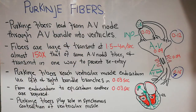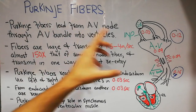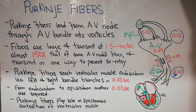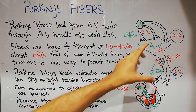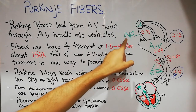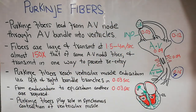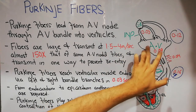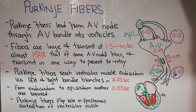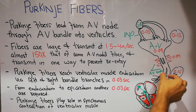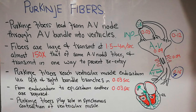Today we are going to discuss the Purkinje fibers — what they are, how they work, and their role in the transmission of electrical impulse from the AV node towards the ventricular muscle. The cardiac impulse for normal heart contraction is generated in the SA node, transferred to the AV node via internodal pathways in about 0.03 seconds, then delayed in the AV node, and carried through the atrioventricular bundle into the ventricles.